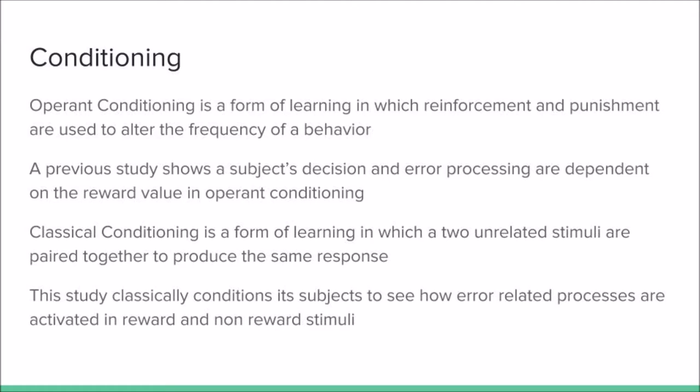Operant conditioning is the form of learning in which reinforcement and punishment are used to alter the frequency of a behavior. A previous study shows a subject's decision and error processing are dependent on the reward value in operant conditioning.